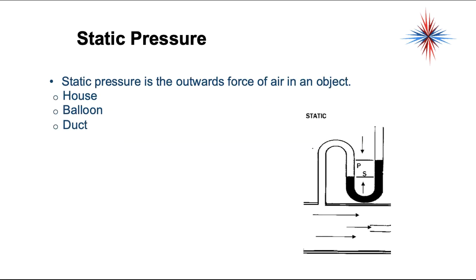Static pressure is the outward force of air in an object — could be a house, balloon, or ductwork. The static pressure is the measurement of the pressure coming out against the sides of the ductwork. It's measured in water column. So the outward force of air is static pressure.